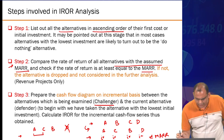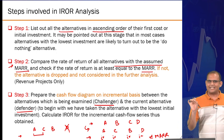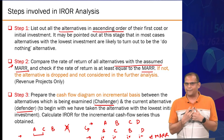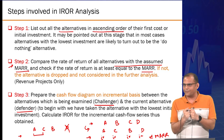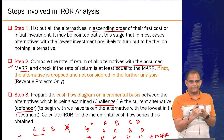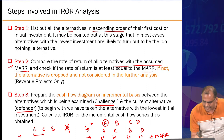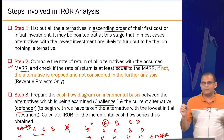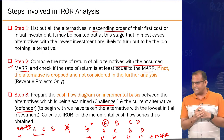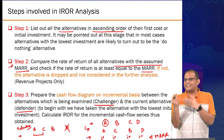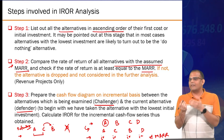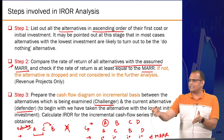This introduces the concept of challenger and defender. The defender is the current alternative with the least cost — it's trying to defend its position as the best alternative. The challenger is the next higher-cost alternative trying to claim that position. When A is the least-cost option, A is your defender and it's challenged by C. You perform analysis between C and A. If the challenger wins, it becomes the new defender and faces the next alternative. If the defender wins, the challenger is eliminated and the defender faces the next challenger.